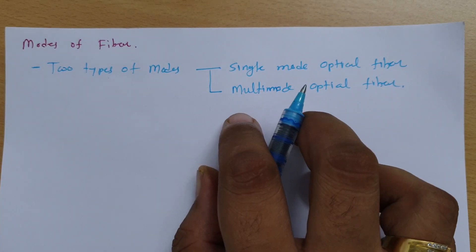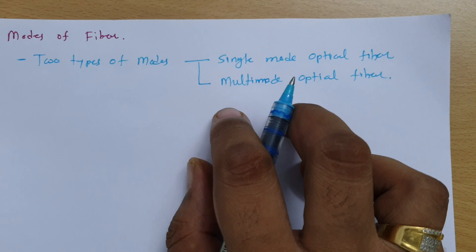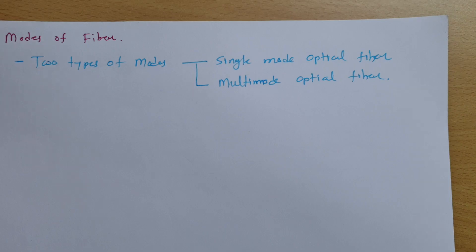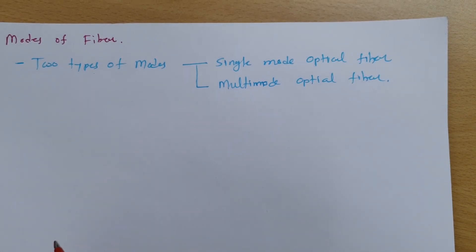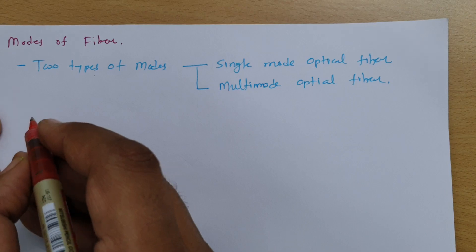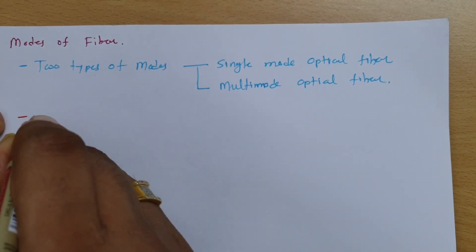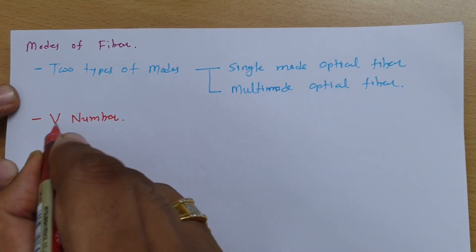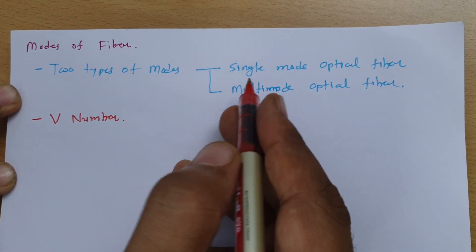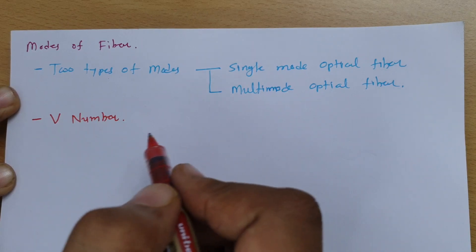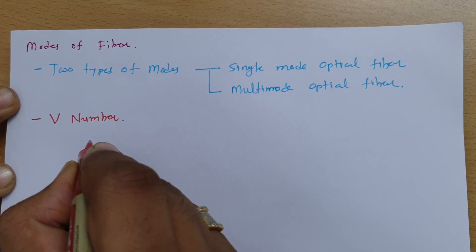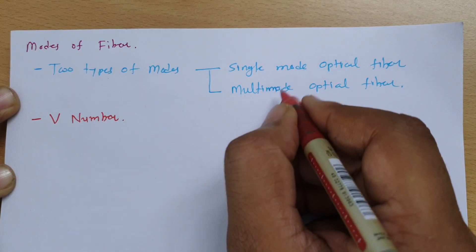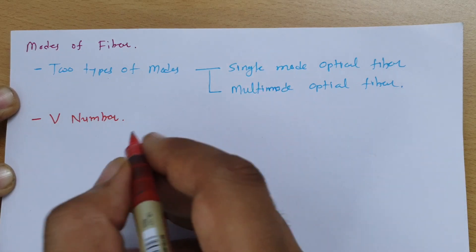Before I explain single mode and multi-mode optical fiber, there is one basic condition we need to check, which is the V number. First I'll explain the V number, and that V number will determine which mode should be utilized for the optical fiber. Then we will discuss both single mode and multi-mode optical fiber.